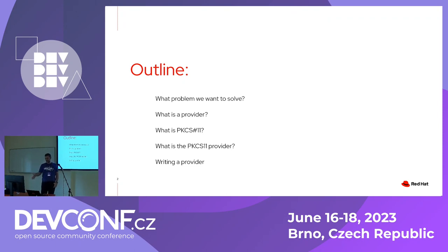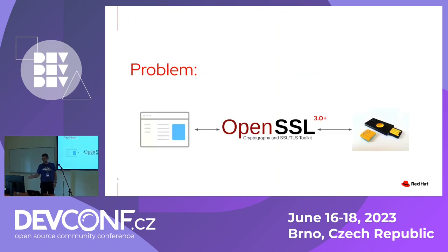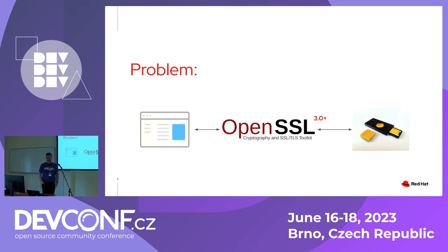I'm going through what is the problem, what is the provider, what is PKCS11, what is the PKCS11 provider, and then what happened when I tried to write one. The problem is simple and not new. In previous OpenSSL versions there was a thing called engines, and there was an engine that allowed you to use PKCS11. The specific problem was with OpenSSL 3, which deprecated engines and introduced providers. The goal is for an application using the OpenSSL API to be able to use a hardware token or software token for cryptographic operations.